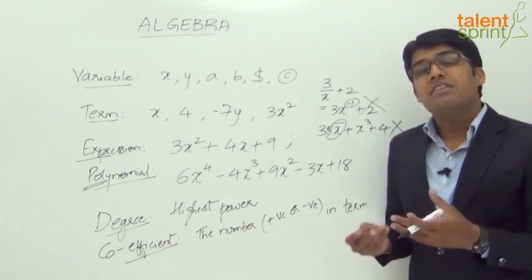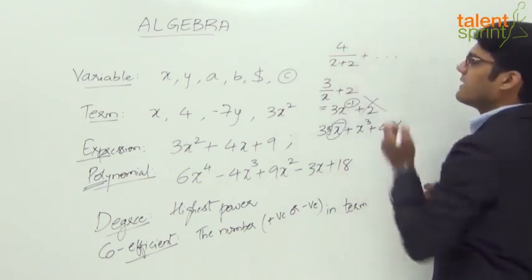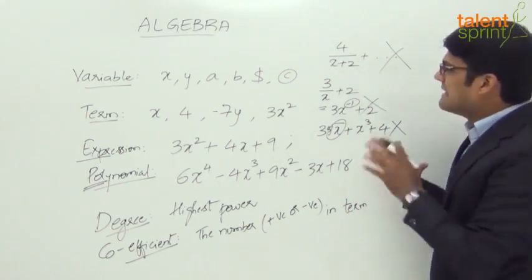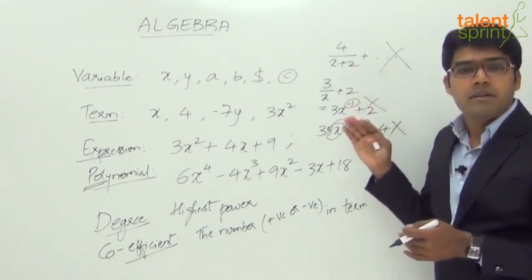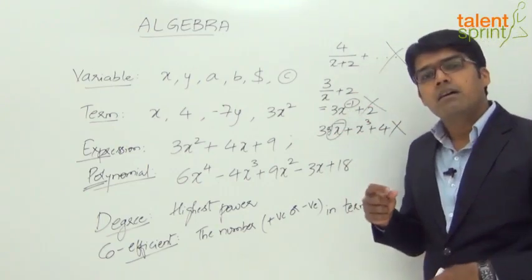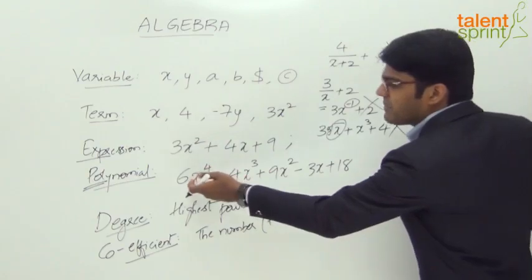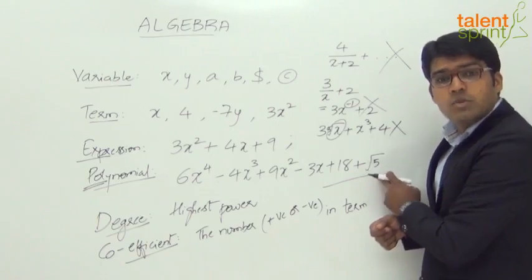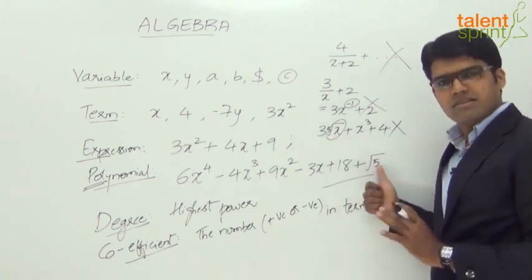Likewise, if it has fractional powers — for example, 3 root x plus x cube plus 4 — this is again not a polynomial, because root x is nothing but x power 1 by 2, which is a fractional power. A polynomial does not consist of fractional powers. Also, it cannot have variables in the denominator — for example, 4 divided by x plus 2 is not a polynomial because x is in the denominator. A polynomial can have an irrational number like root 5 as a constant, but it cannot have roots in the form of a variable like root x.